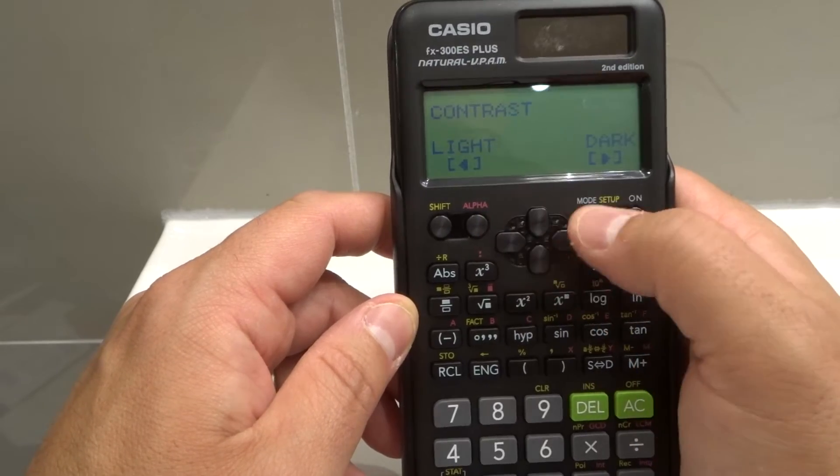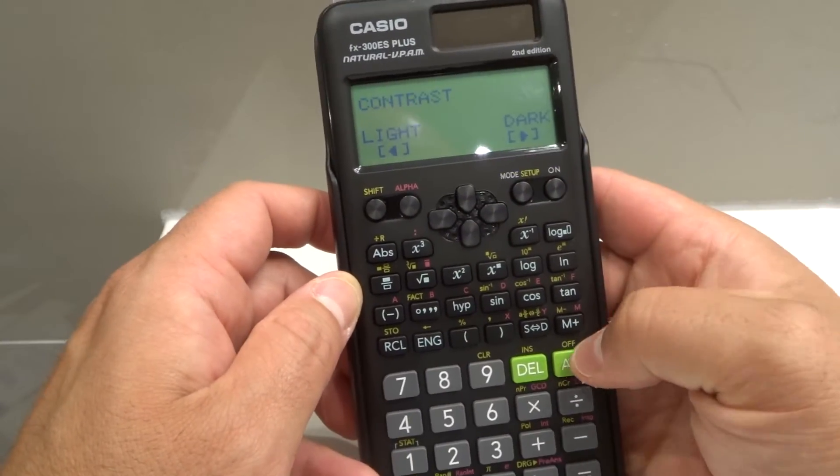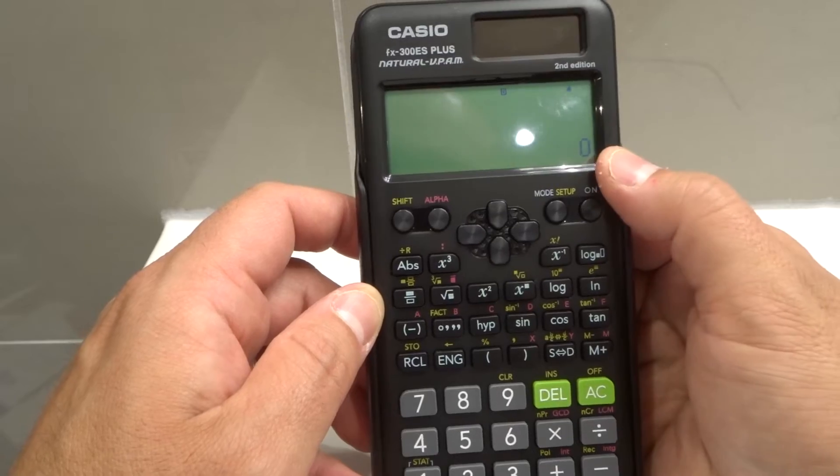So let's say I wanted it to be that level of contrast. I'm good to go. I can push all clear and I now have that lighter contrast.